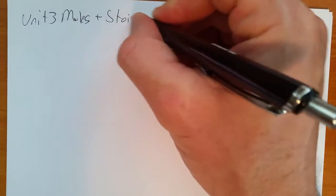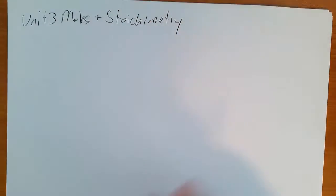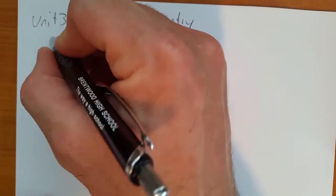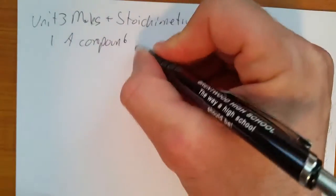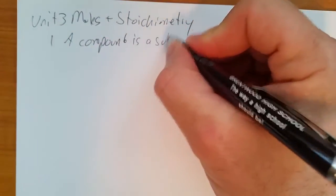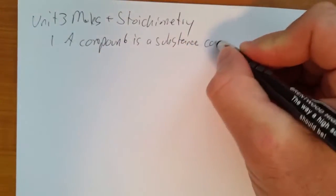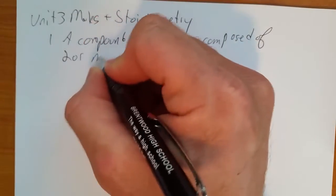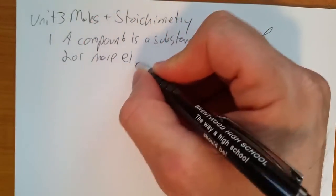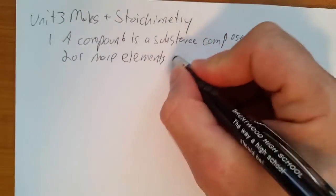We're continuing with our Regents review for Unit 3, Moles and Stoichiometry. First, a little review. A compound is a substance composed of two or more elements chemically combined.